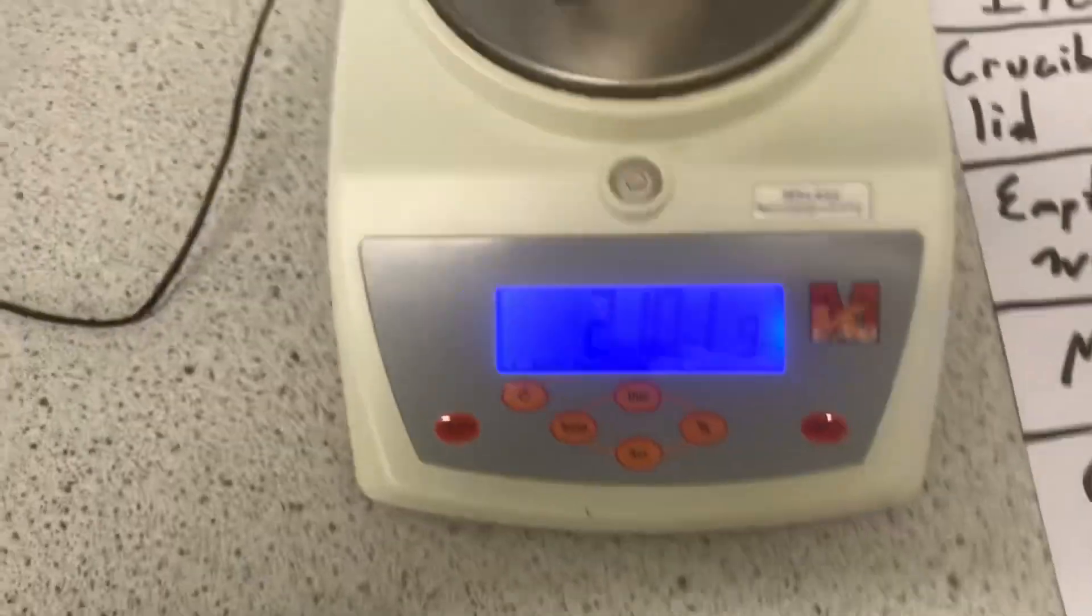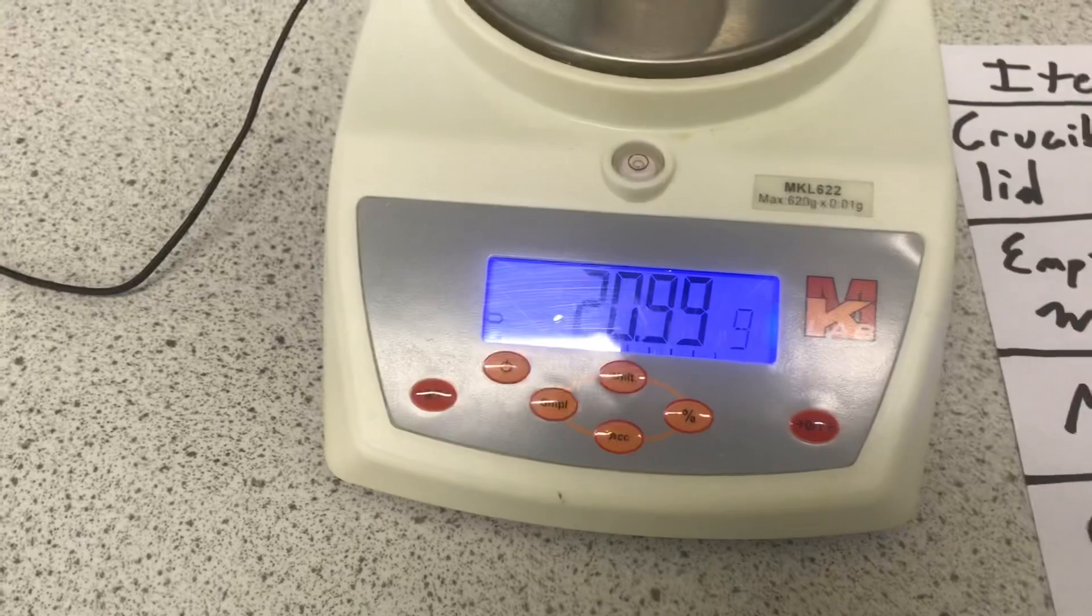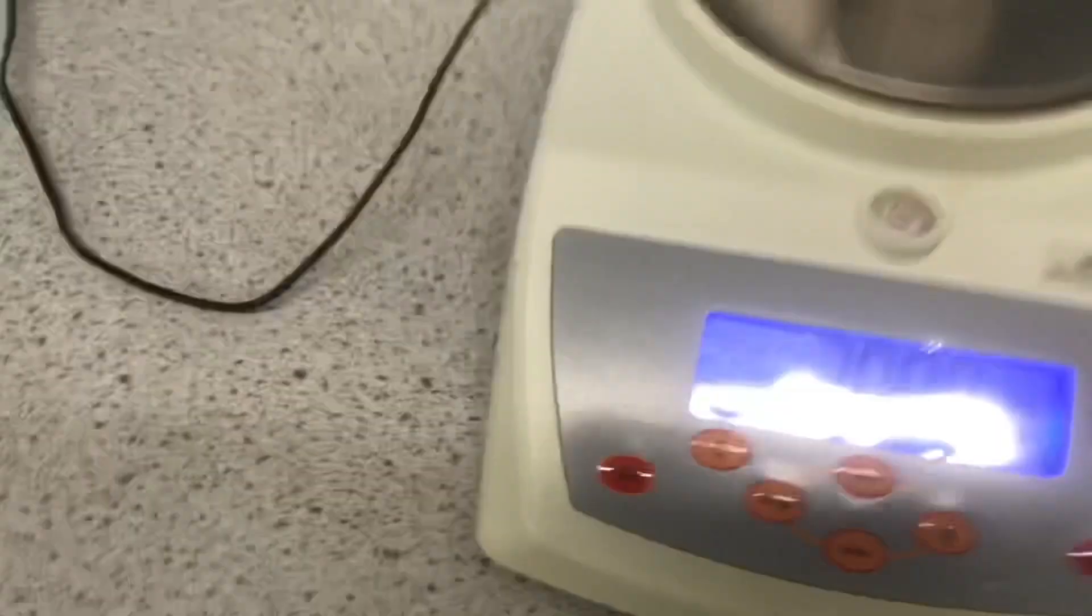Now, I'll just remove the magnesium to find the mass of the empty crucible with the lid, which is exactly 20.99 grams.